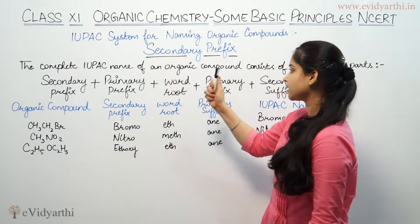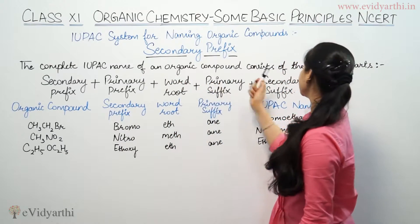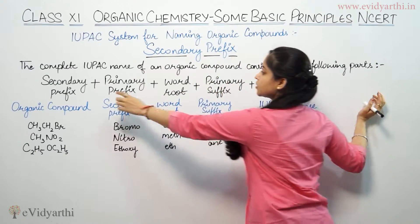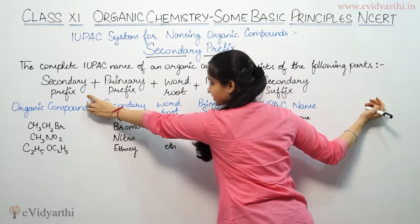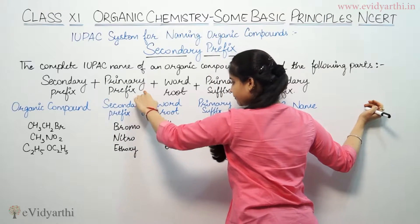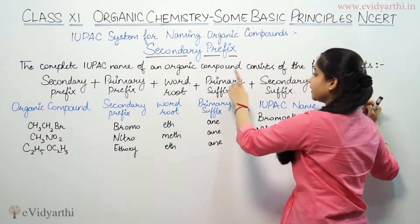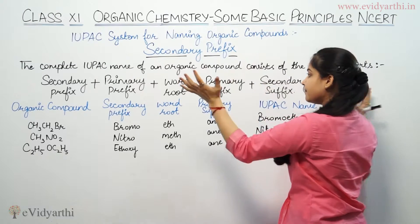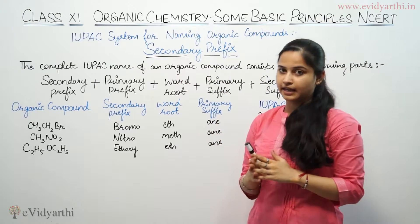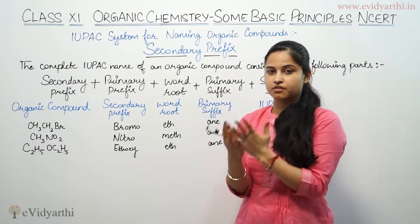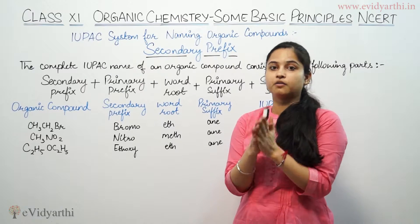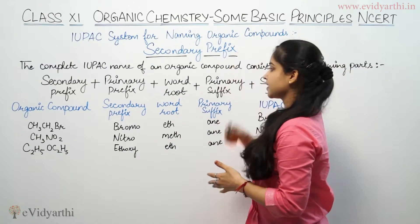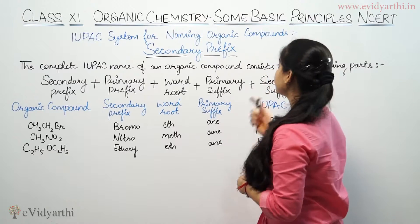The complete IUPAC name of an organic compound consists of the following parts — do remember this: secondary prefix, then primary prefix, then word root, then primary suffix, then secondary suffix. Club them all and we will get the IUPAC name of the particular organic compound. Now, taking the example regarding secondary prefixes.